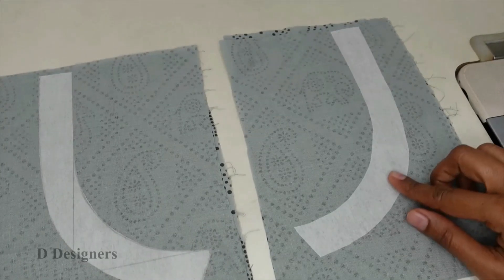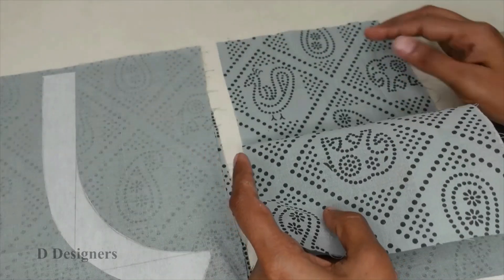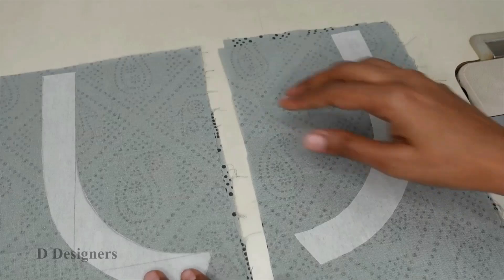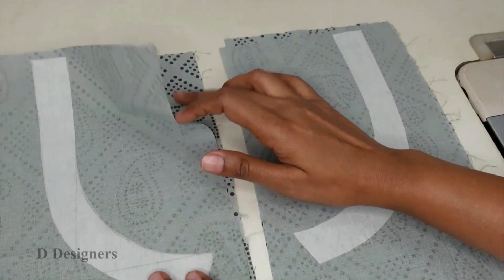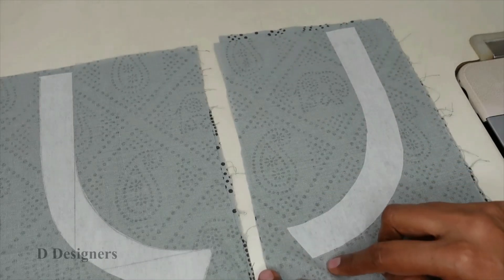I have pasted this neckline on the wrong side of the fabric and this is the right side. I have taken two pieces each. Now I am going to make a stitch here and turn it to the right side.